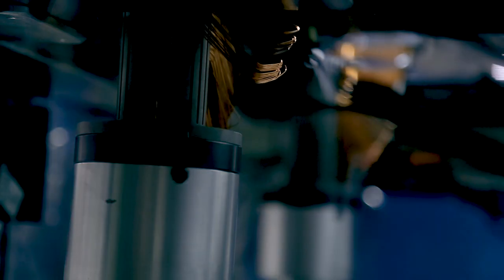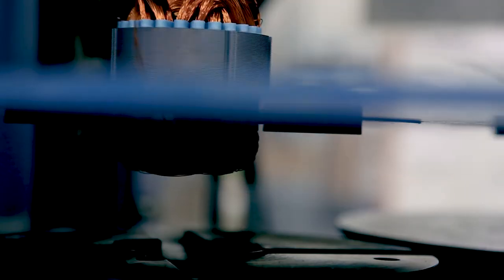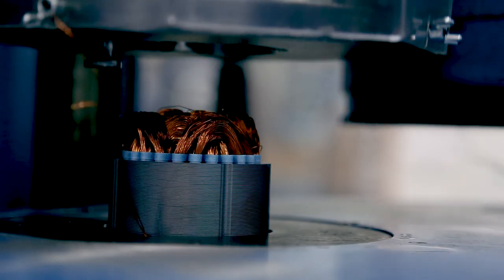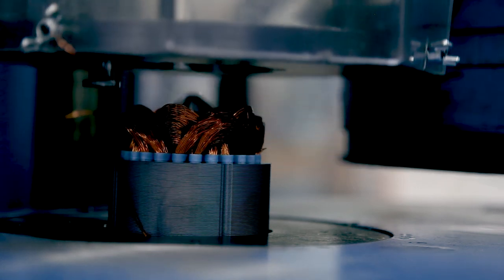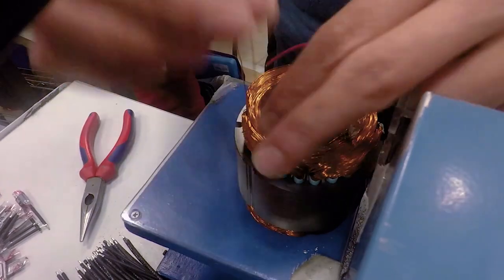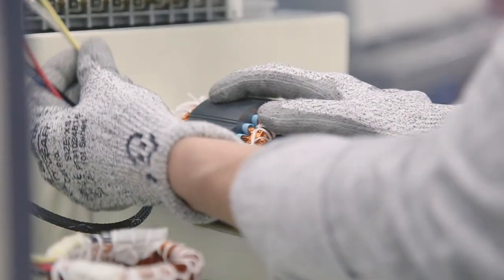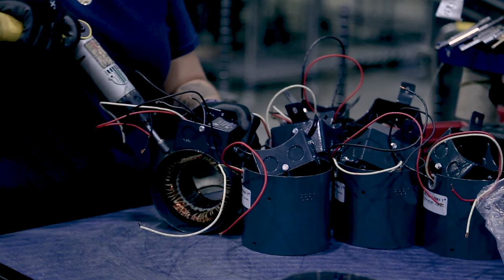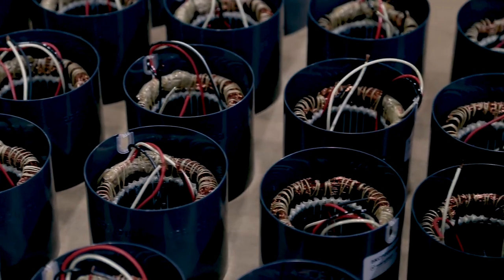On the AC side we start with laminations again and copper wire. We wind the stator, we do a lot of inspection and testing on the stator, we varnish it, we turn the rotor core on the rotor shaft, we put it all together, and now we've got a finished AC motor, and then all those parts flow into assembly.